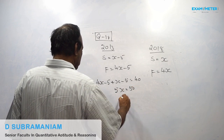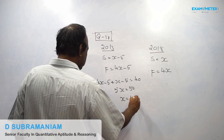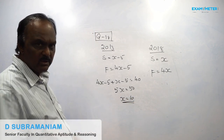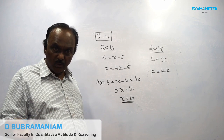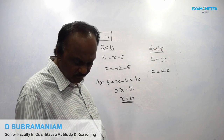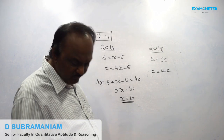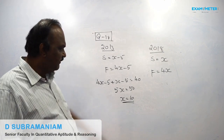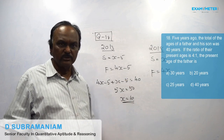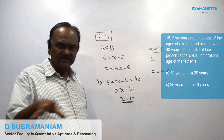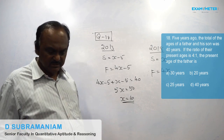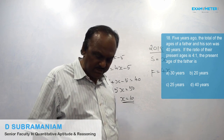5x is equal to 50, so x value comes to 10. In this problem, we must find out the present age of the father. Present age of the father is 4x. x value comes to 10. Four into 10 is 40. So present age of the father is 40 years. So answer is 40 years, that is multiple choice D.